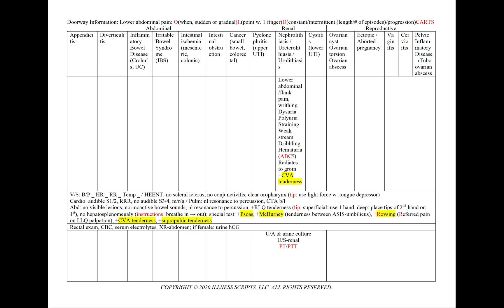In nephrolithiasis, ureterolithiasis, or urolithiasis, we'll see lower abdominal or flank pain with characteristic writhing. There can be dysuria, polyuria, straining, a weak stream, and dribbling, along with hematuria that can now radiate to the groin. Positive CVA tenderness will be seen on physical exam. In cystitis, or a lower urinary tract infection, we can see lower abdominal pain with dysuria, polyuria, and hematuria, and suprapubic tenderness.